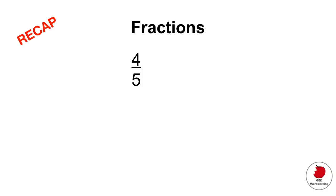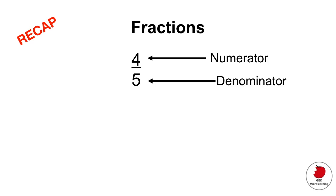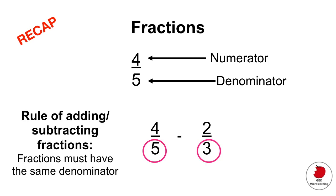First of all let's do a quick recap on fractions. Fractions have a top number which is called the numerator and a bottom number called the denominator. The rule of fractions is that in order to either add or subtract fractions, the bottom number — the denominator — has to be the same for both fractions. This is something you have to commit to memory.